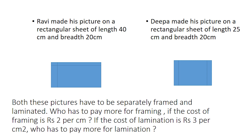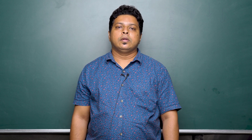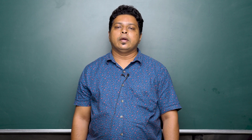Now let us take a problem to understand this concept. Ravi made his picture on a rectangular sheet of length 40 centimeters and breadth 20 centimeters. Deepa made his picture on a rectangular sheet of length 25 centimeters and breadth 20 centimeters. Both pictures have to be separately framed and laminated. Who has to pay more for framing if the cost of framing is rupees 2 per centimeter, and who pays more for lamination if the cost is rupees 3 per centimeter square? Perimeter implies the frame, and lamination implies the area of these pictures.